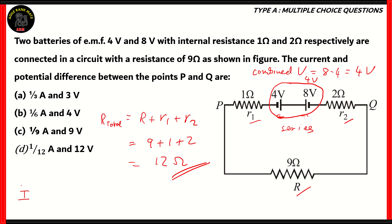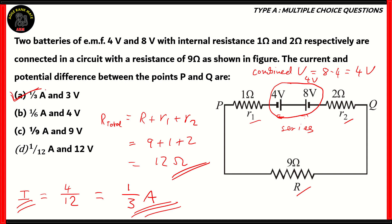Current across the circuit, I, is equal to voltage over resistance — that's Ohm's law. So 4 upon 12, which is equal to 1/3 amperes. Since only one option has 1/3 amperes, we can safely say that option A is the correct option and all the others are incorrect. So in the exam, if you want to fast-track finding the answer, you can stop at 1/3 amps.